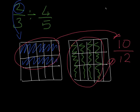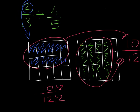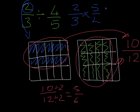So I write 10 over 12, which equals 5 over 6. Now I'll show you using the method you know for dividing fractions: you leave the first fraction the same, change the sign to multiplication, and find the reciprocal of the second fraction — just flip it. Then 2 times 5 is 10, and 4 times 3 equals 12. You reduce, and your answer is 5 over 6.